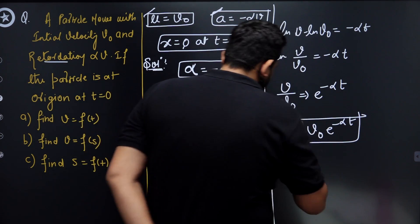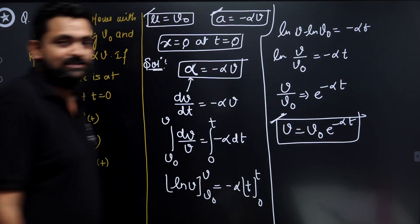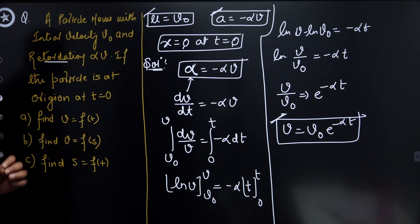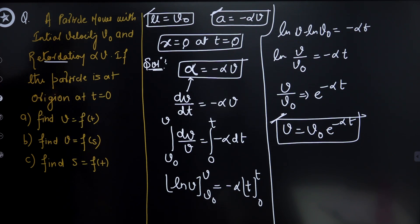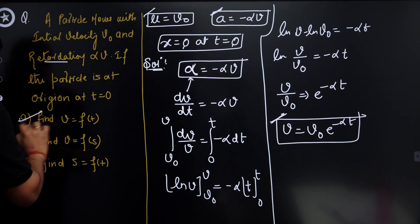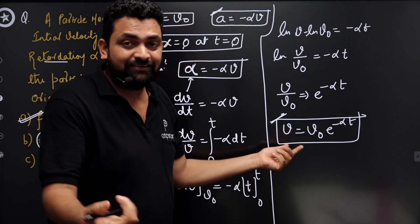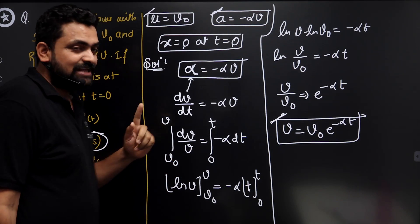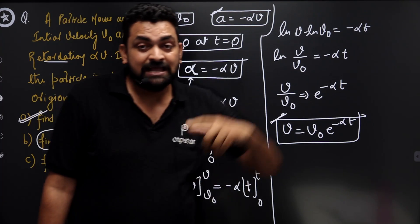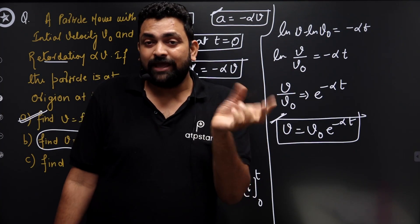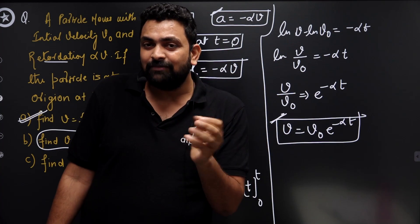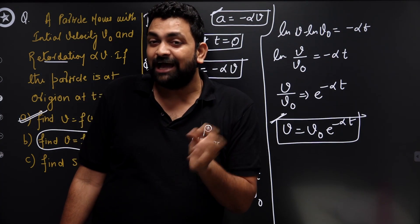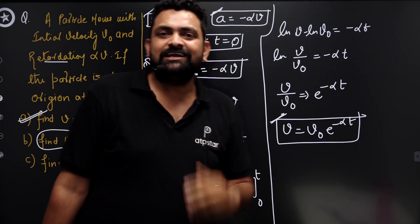Integrating both sides with limits v₀ to v (for velocity) and 0 to t (for time): ln(v) minus ln(v₀) equals minus alpha·t, so ln(v/v₀) equals minus alpha·t. Therefore v equals v₀·e^(minus alpha·t). That is the first part — v as a function of t.